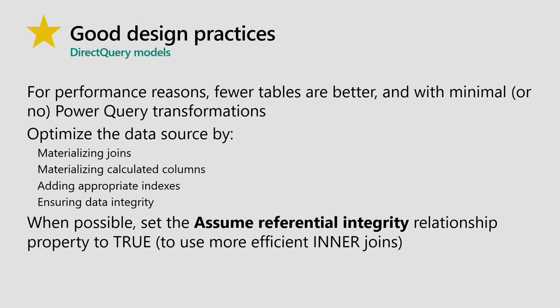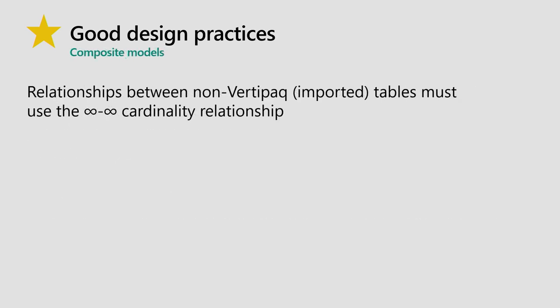For direct query models, the only additional relationship property is 'assume referential integrity': when enabled, queries use more efficient inner joins rather than outer joins when joining tables. Where you know referential integrity is enforced at the source, check that property. For composite models blending import and direct query, many-to-many relationships must be enforced between the imported data and direct query data.